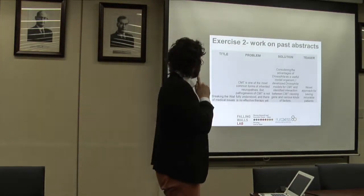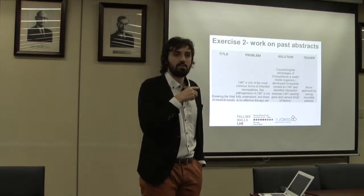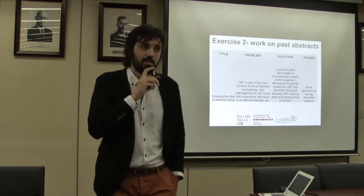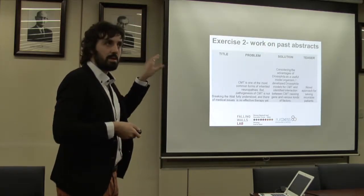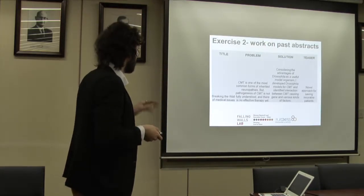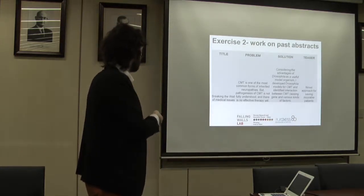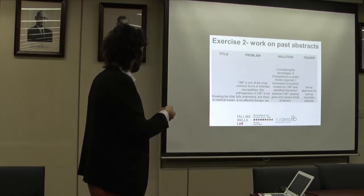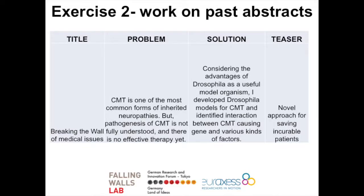Now another exercise: past abstracts submitted to previous editions of the Falling Walls Lab Tokyo. As you saw in the slide showing the abstract structure, you have a typeline — 'Breaking the Wall of...' with a maximum of 40 characters. You have a problem statement — 200 characters maximum. You have the solution — 200 characters. And you have a teaser — a kind of subtitle — at 50 characters maximum. I have two different examples. We'll work on the typeline and problem statement only.